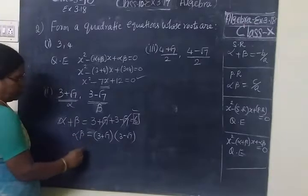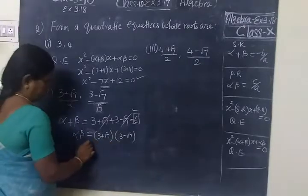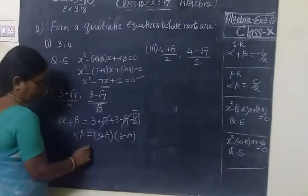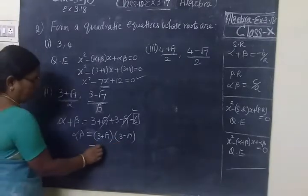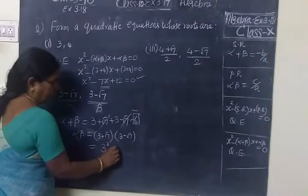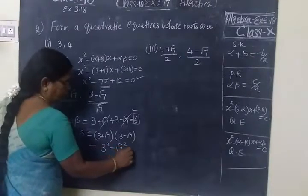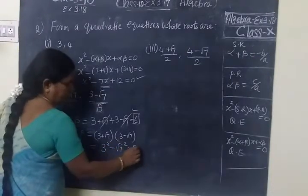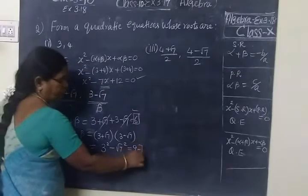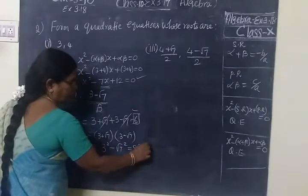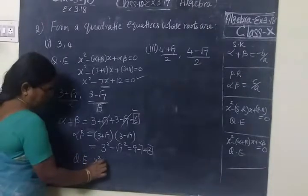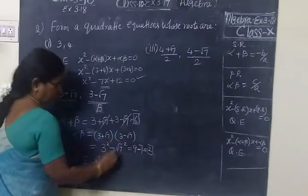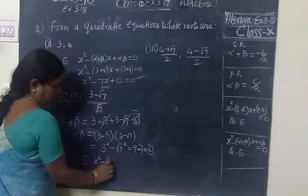So we are substituting a plus b into a minus b. So this is of the form a plus b into a minus b. So formula is a square minus b square. So 9 minus root 7 square is nothing but 7, so equal to 2. So now quadratic equation: x square minus sum of the roots. Sum of the roots is equal to 6 here.